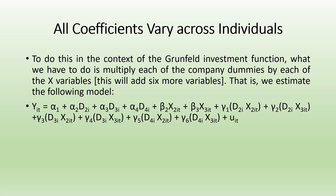Here we are going to consider the interaction model. To do this, we create dummies for the cross-section and multiply these dummies by the independent variable. So Y_it equals alpha 1 plus alpha 2 D2i plus alpha 3 D3i plus alpha 4 D4i — there are 4 cross-section units so 3 dummies. X2it and X3it are the independent variables. Then we multiply D2i with X2it (gamma 1), D2i with X3it (gamma 2), D3i with X2it (gamma 3), D3i with X3it (gamma 4), and so on — exactly like the test grade example with student times study time.